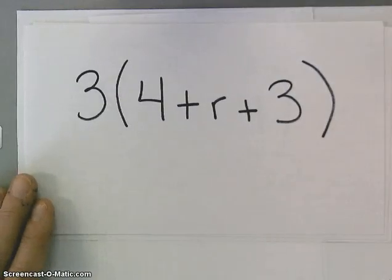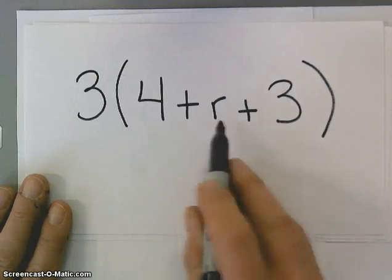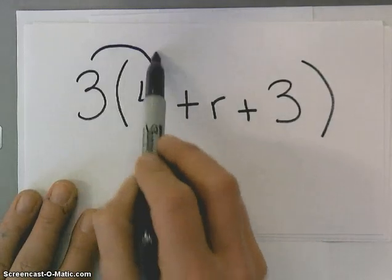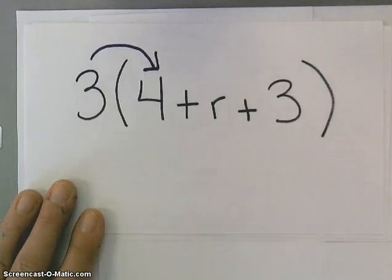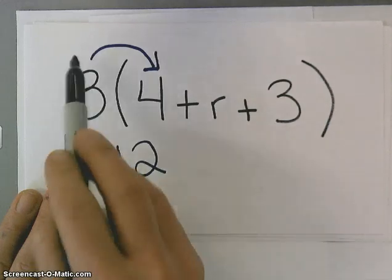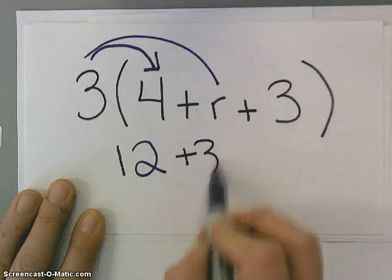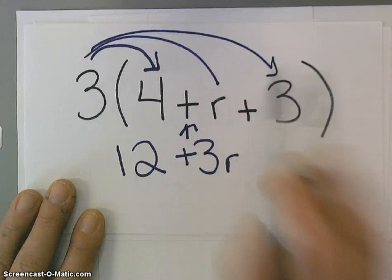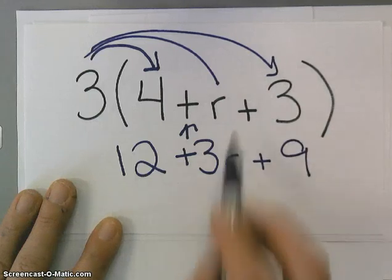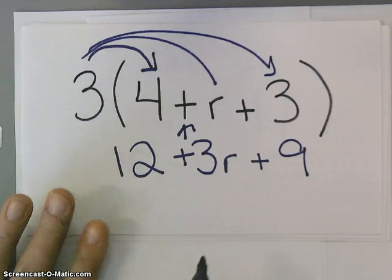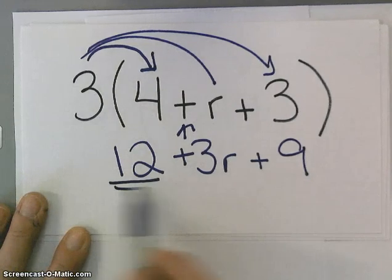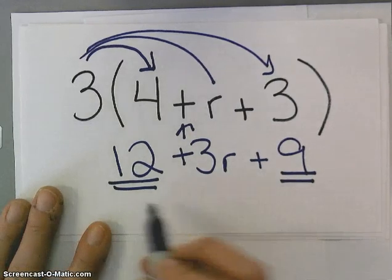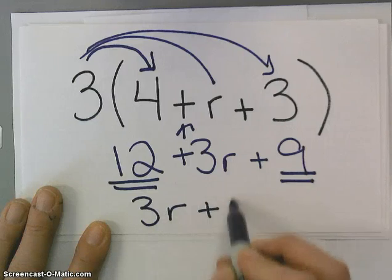For our next example, I have three terms inside the parentheses. That does not change anything. All I have to do is multiply 3 times 4, and I get 12, and then 3 times r is plus 3r, because I have my plus sign, and I have 3 times 3, which is plus 9, because I have my plus sign. And then I take a look, and I say, well, I have a 12, and I have a 9. I can combine those by using my commutative property, and say that 3r plus 21.